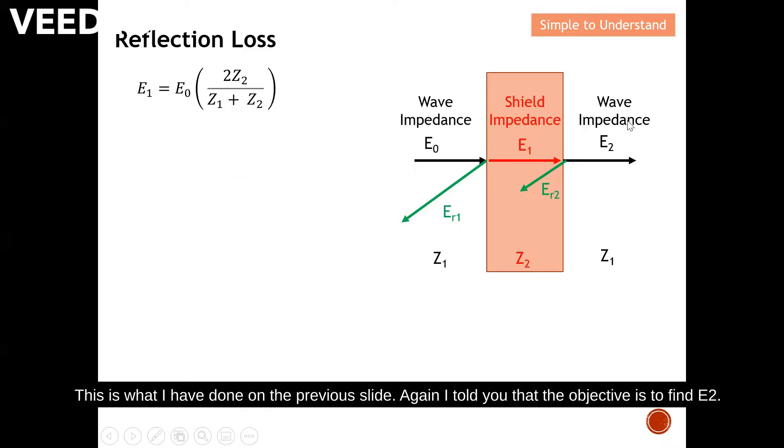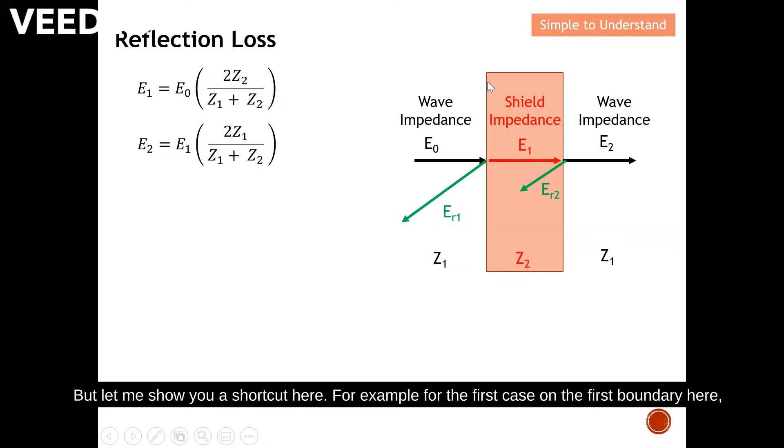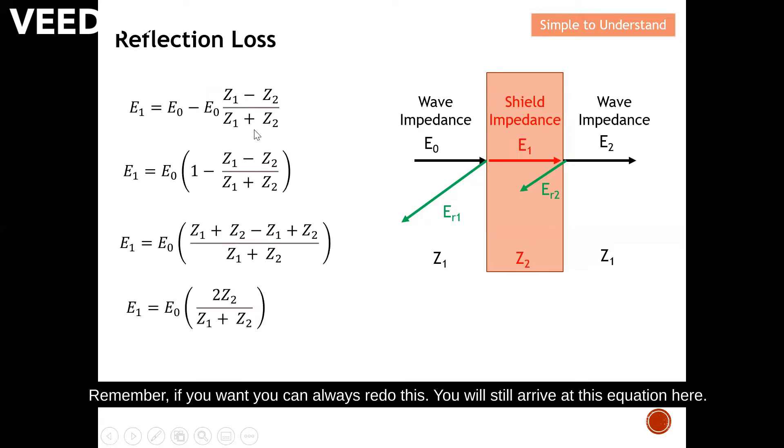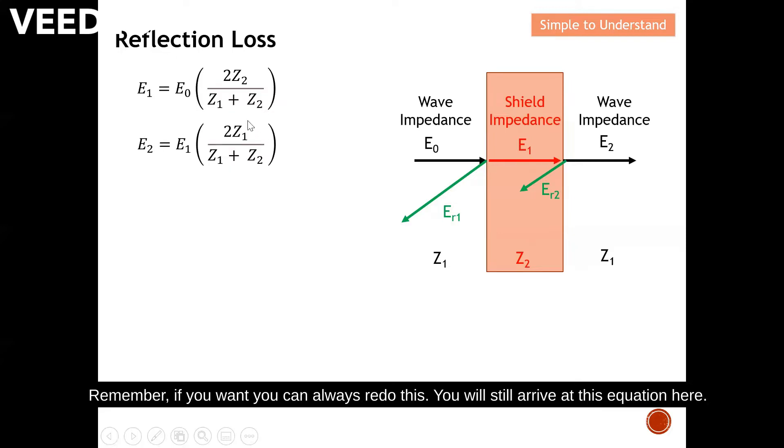The objective is to find E2. In the interest of time, if you repeat all this, you should be able to find E2. But let me show you a shortcut here. For the first case on the first boundary, this is the incident wave. This is what I want to find. E2 is what I want to find, and E1 now is the incident wave. Earlier on, the wave actually traveled from Z1 to Z2. Now, it's from Z2 to Z1. So Z1, I need to change to Z2, and Z2, I need to change to Z1. In result, I actually can obtain this equation here. If you want, you can always redo this. You will still arrive at this equation. But I just want to show you a shortcut here.